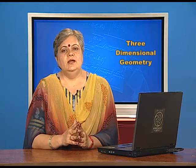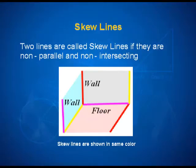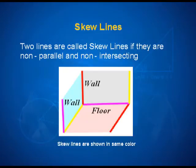Let us take a look at what skew lines mean. We define two lines to be skew lines if they are non-parallel and non-intersecting. Suppose we look at the room where you are sitting — can you identify two lines which are skew, lines which are neither parallel nor intersecting? If you look at the edges of the walls which are in the same color, then these lines will be neither parallel nor intersecting, and therefore they are skew lines.